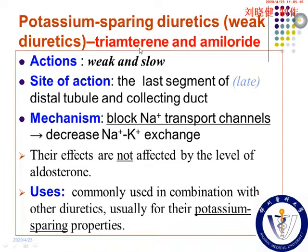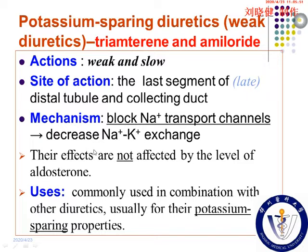Amiloride and triamterene are also potassium-sparing diuretics. They have a relatively weak and slow diuretic effect. But different from spironolactone, they are not competitive antagonists of the aldosterone receptor. So their diuretic effects are not affected by the level of aldosterone, because they act on the distal tubule and collecting ducts by blockage of sodium transport channels to decrease sodium-potassium exchange, working as potassium-sparing diuretics commonly used in combination with other diuretics.